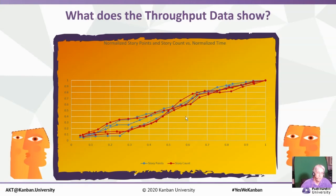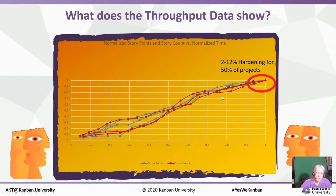We want to look deeper than that and do a bit more statistical analysis. We also noticed in the data a fairly common behavior: a hardening phase of 2% to 12% at the end for about 50% of the projects. So they weren't at the point where they had completely eliminated the need for some sort of an end-state phase — just an interesting tidbit that came out of the data.